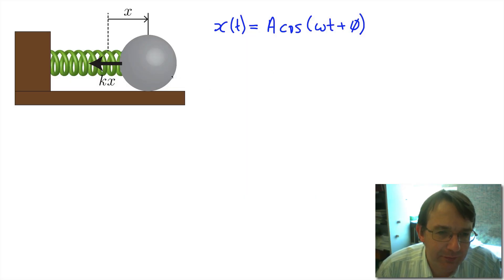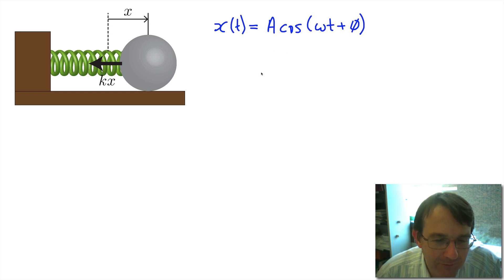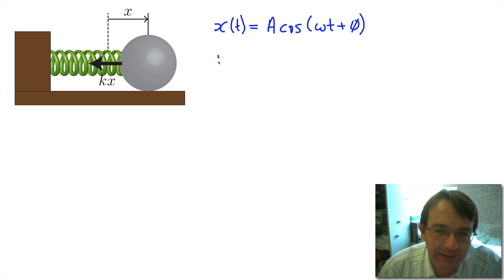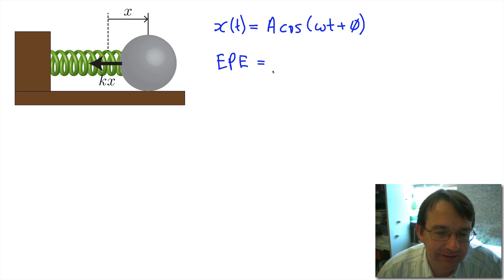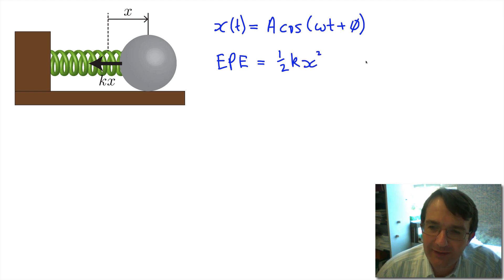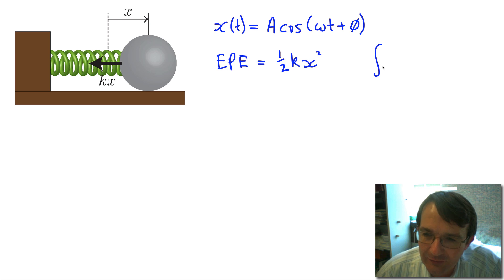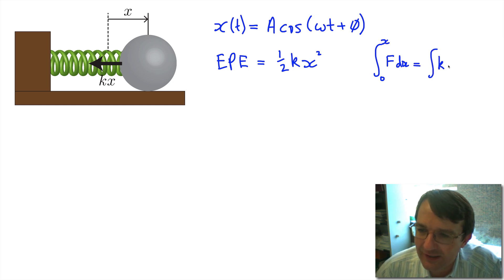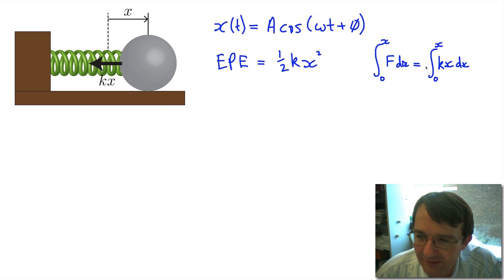Now let's have a look at the potential energy. Here we have our mass-spring system, and our displacement as a function of time is the formula we've seen many times before. We're now asking: what is the elastic potential energy of this system? The elastic potential energy stored in a spring is ½kx², and that comes from integration of the force with respect to x from zero to some extension x — that is, the integral of kx with respect to x from zero to x — which gives us ½kx².